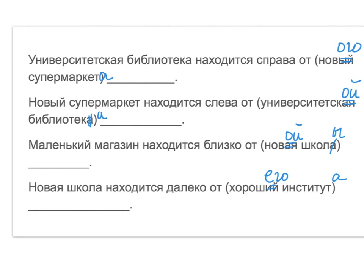Маленький магазин находится близко от новой школы. Новая школа находится далеко от хорошего института. Again, why did we choose ЕВА instead of ОВА? It's because of the spelling rule.